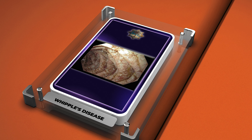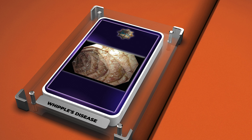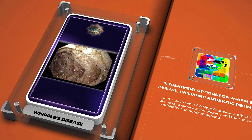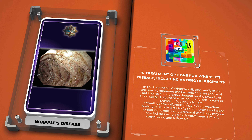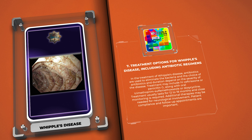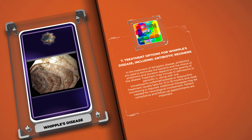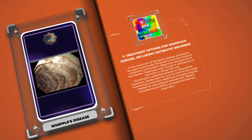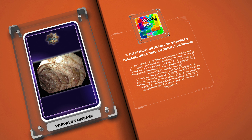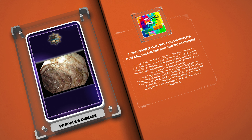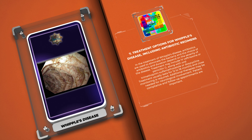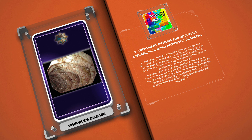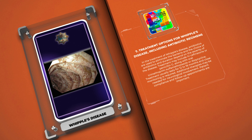In the treatment of Whipple's disease, antibiotics are used to eliminate the bacteria, and the choice of antibiotics and duration depend on the severity of the disease. Treatment may include IV ceftriaxone or penicillin G, along with oral trimethoprim-sulfamethoxazole or doxycycline. Treatment usually lasts for 12 to 18 months and close monitoring is required. Additional therapies may be needed for neurological involvement. Patient compliance and follow-up appointments are important.